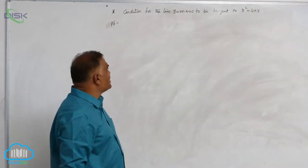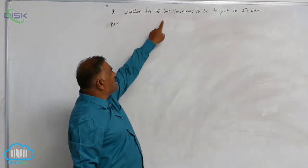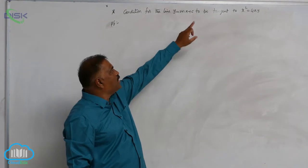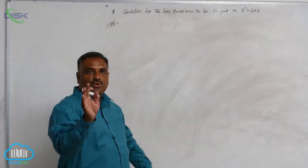Let us discuss the most important result: the condition for the line y equal to mx plus c to be a tangent to the parabola x square equal to 4ay.